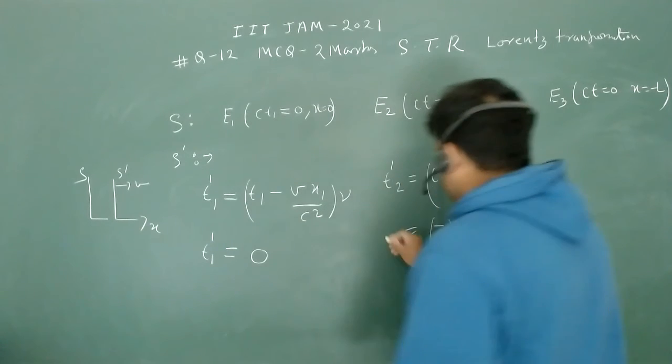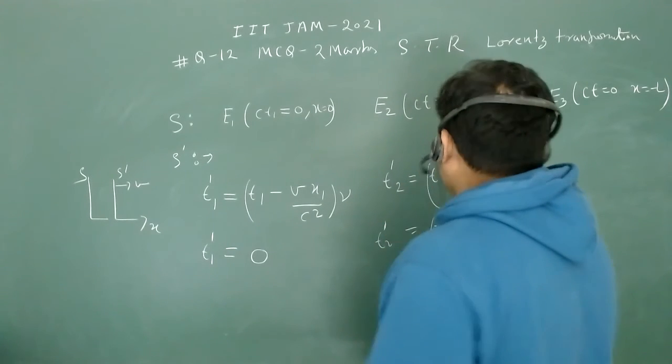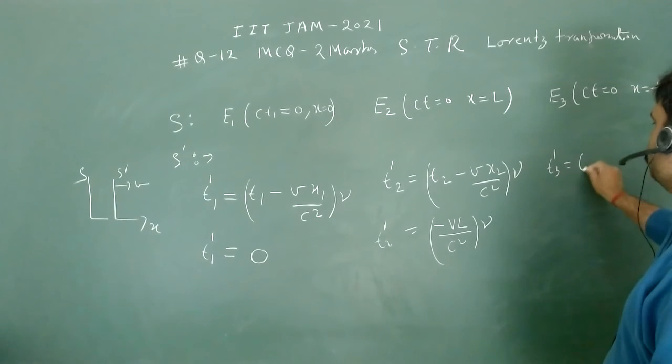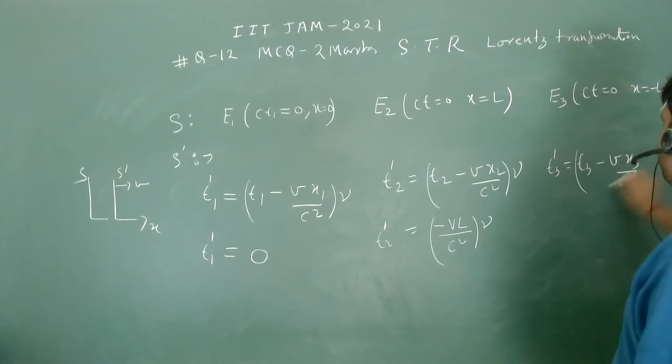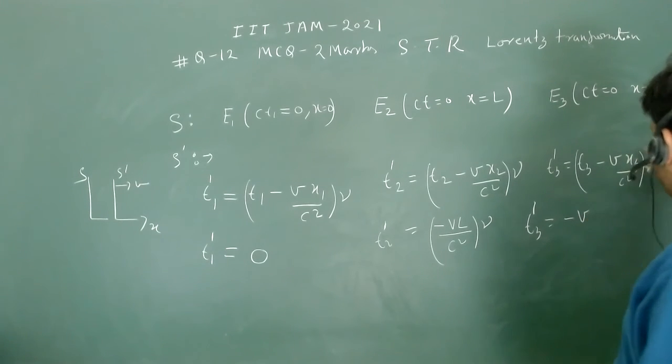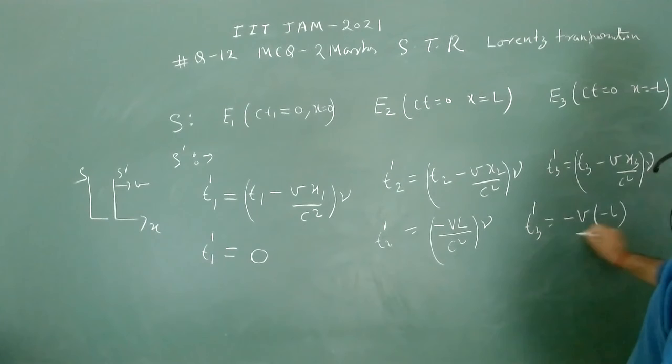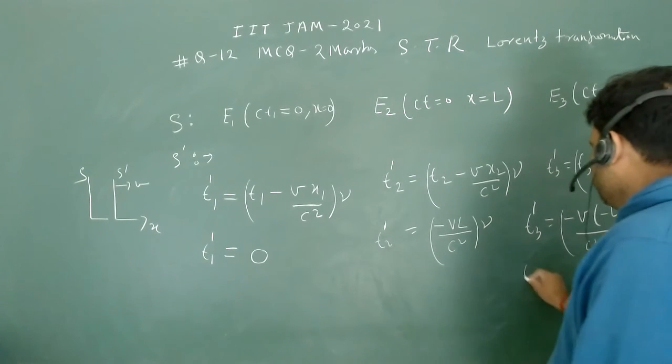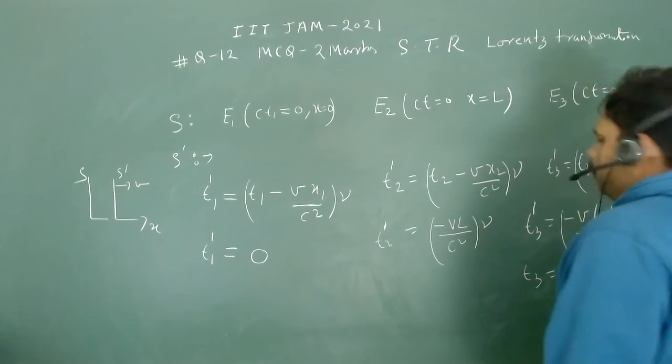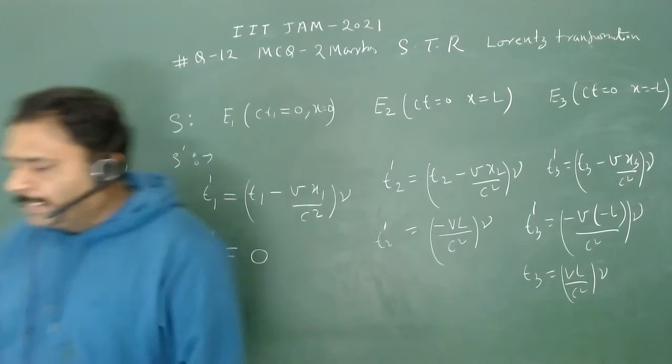For t3', t3' = (t3 - vx3/c²)γ. We can get t3' equals minus v times x3, which is minus l, upon c² multiplied with γ. So t3' is basically vl/c²γ.